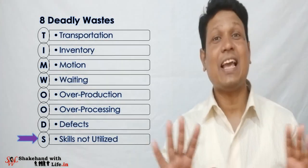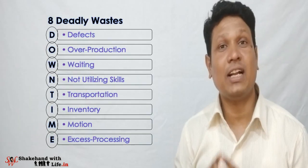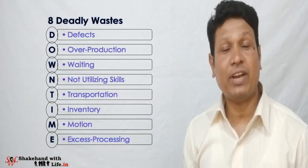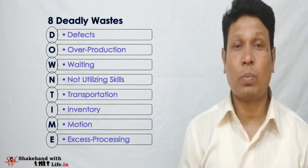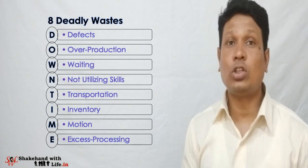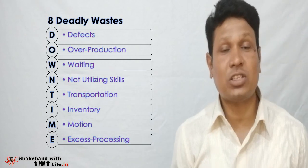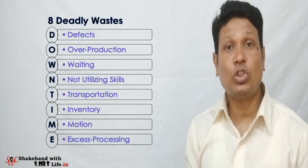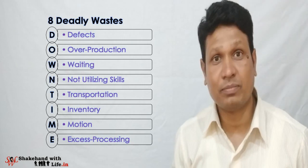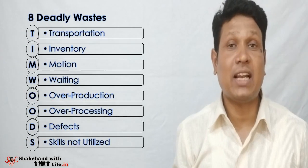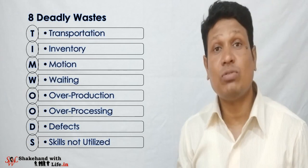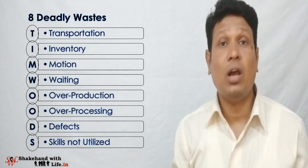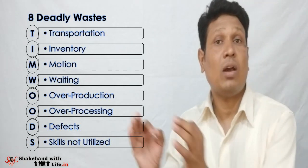When the Toyota Production System was adopted by the western world, the 8th waste — skills, or not utilizing the talent of employees — was added. We now have 8 deadly wastes referred by the acronym TIMWOODS, where the S stands for Skills. These 8 wastes are also referred to by the acronym DOWNTIME: Defects, Overproduction, Waiting, Not utilizing skills, Transportation, Inventory, Motion, and Excess Processing.